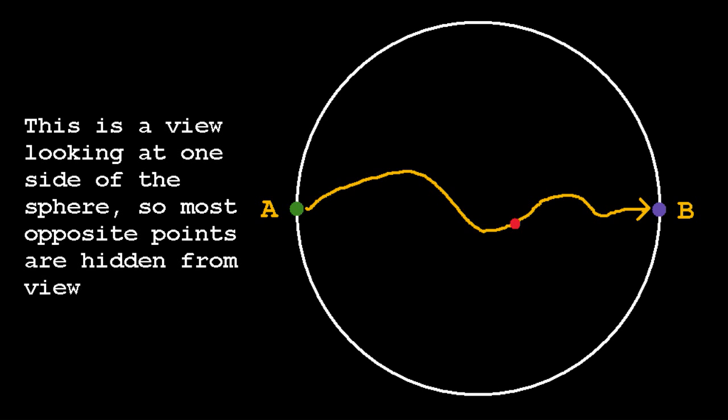Now consider the set of all the opposite pairs on the sphere with equal temperature. Note that these points don't have to have the same temperature as all the other points. They only need to have the same temperature as their opposite to be in this set, this very exclusive club of points that satisfy our condition.